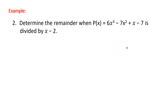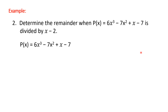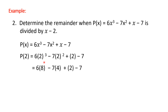For the second example, we are to determine the remainder given that the polynomial is 6x³ - 7x² + x - 7, divided by (x - 2). The polynomial is written out, with divisor (x - 2). The opposite of -2 is +2, so we substitute every x with positive 2. So x³ becomes 2³ and x² becomes 2².